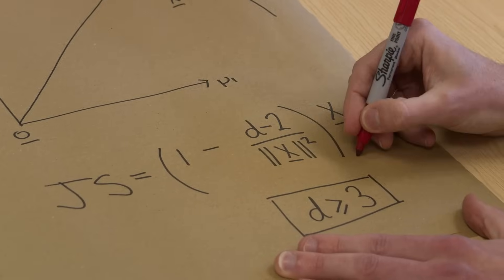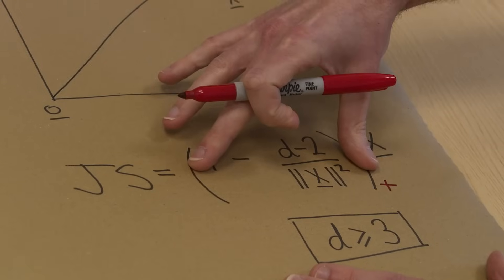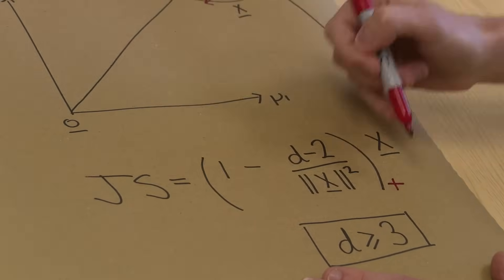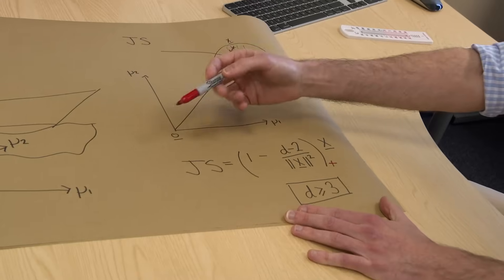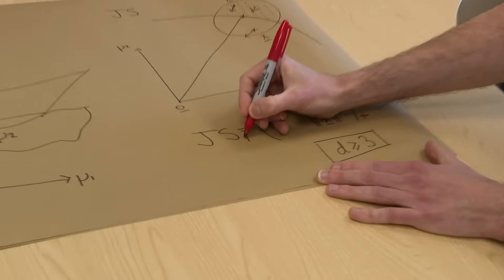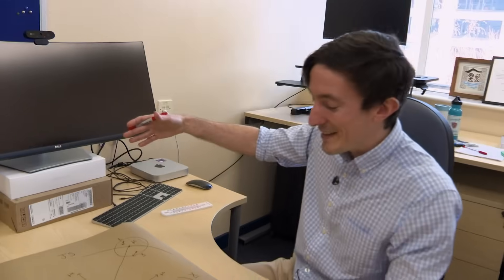There's a nice symbol for this: if I put this subscript plus, that means take the maximum of whatever's here and zero. You can show that this estimator — called the James-Stein plus estimator — has a mean squared error that's uniformly lower than the James-Stein estimator in dimension three and above. But even the James-Stein plus estimator is inadmissible. You can build a sequence of increasingly more complicated estimators that are each strictly better than the one before it. There's a really deep story about shrinkage here that goes far beyond what our intuition would suggest.